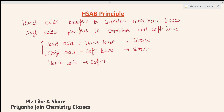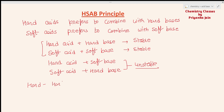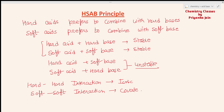If you make a combination of a soft acid with a hard base, or a hard acid with a soft base, you get an unstable complex. One more important point: hard and hard interaction is always ionic in nature, while soft and soft interaction is covalent, involving pi bonding as well.